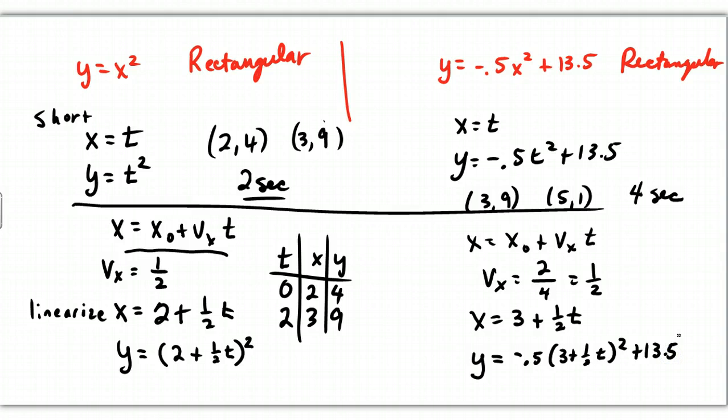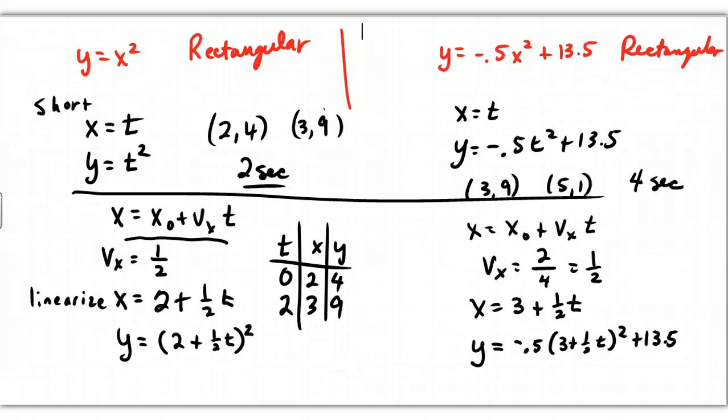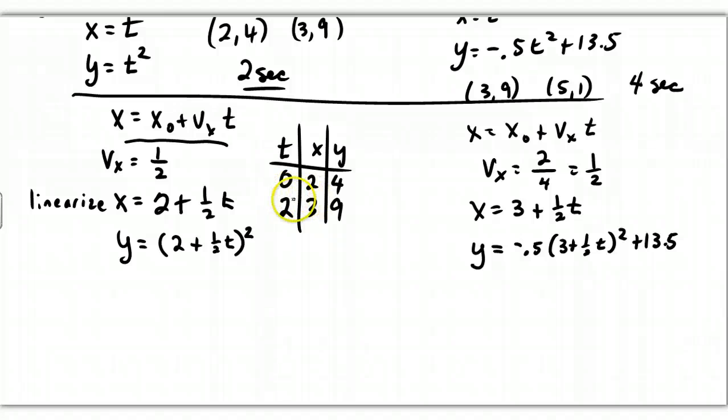Are we done? Almost. Not fully. What happens is that since I'm starting not at time 0, I have to still translate this. So if I start this at time equals 2 because I finished the last one at 2, I need to start this one at 2. I need to translate this t by t minus 2. So this would be x equals 3 plus 1/2 wherever I see the t, I'm going to replace it with (t - 2). And then my y value is going to be negative 0.5 times (3 + 1/2(t - 2)) quantity squared plus 13.5. That will give you your equation that's going to start at time 2.